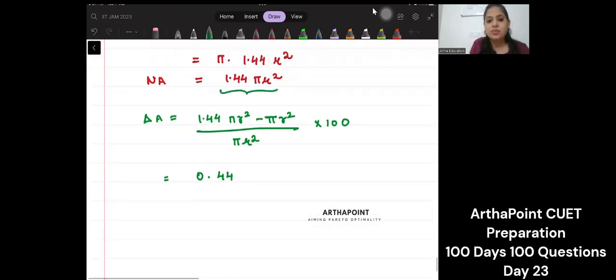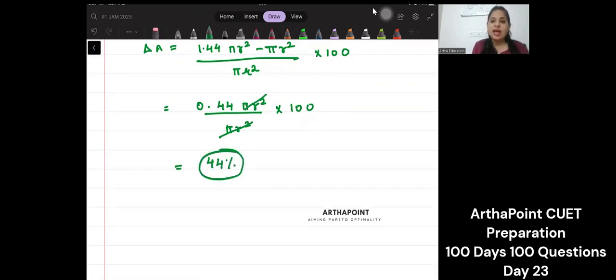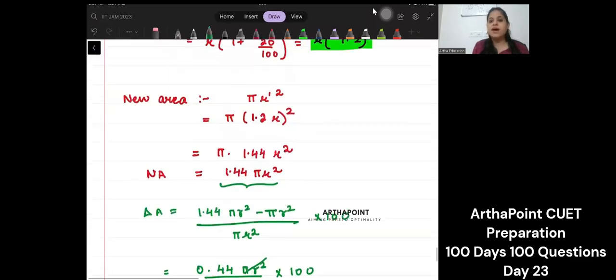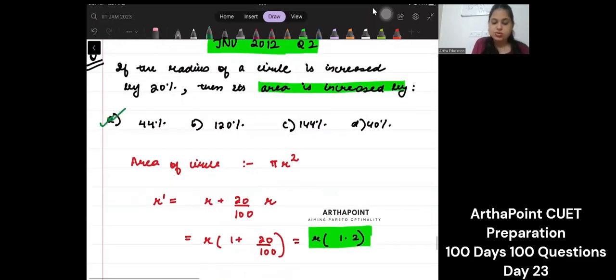Yeh ye galat hojaga, right? So 0.44πr² upon πr² into 100. This is going to be 44%. So the area is going to increase by 44%. This is the answer to this question.